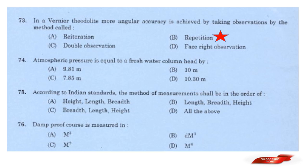Question: Atmospheric pressure is equal to the fresh water column head of? Options: 9.81 m; 10 m; 7.85 m; 10.30 m. Answer: Option D — 10.30 m. Atmospheric pressure is equal to a fresh water column head of 10.3 m.